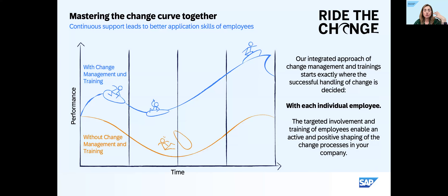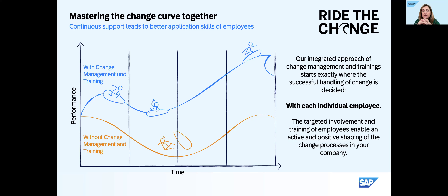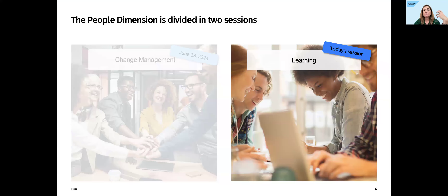When we look at the change curve, if you don't train and don't use change management, you will still master the curve eventually — but it will take more time. It is not as fast as it could and would be with change management and training. Training and change management are the two dimensions of the people dimension of a project. We had a change management session earlier this month — you can always look at the recording. Today we will focus on training.